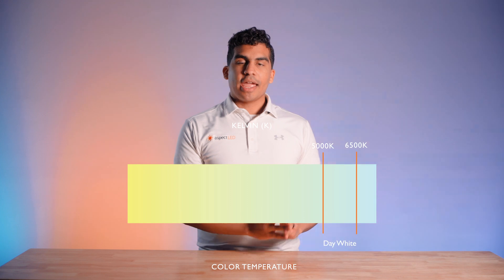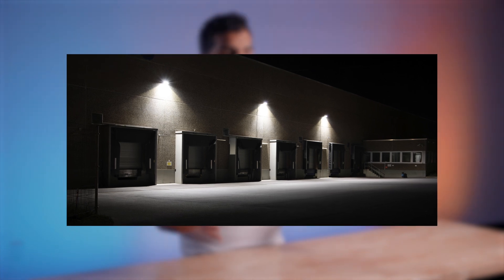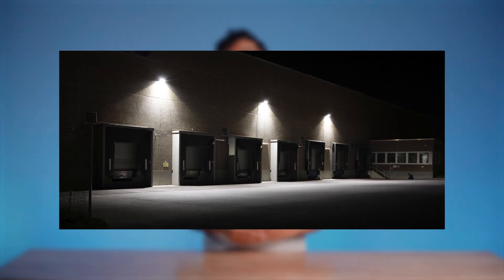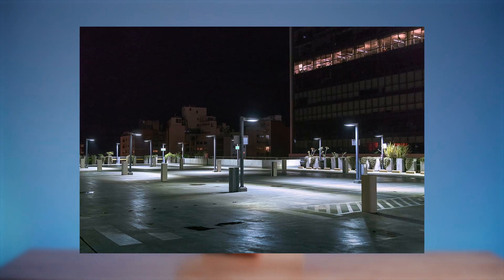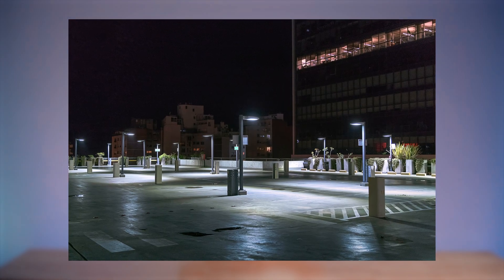Our last one is 5000 to 6500K. This is going to be used to replicate your daylight. This is best used outside or for exterior applications where color accuracy is very important.